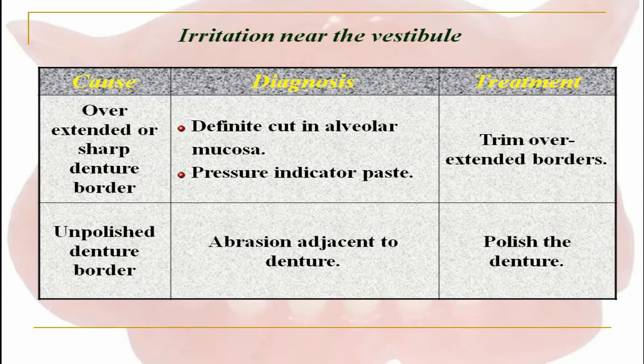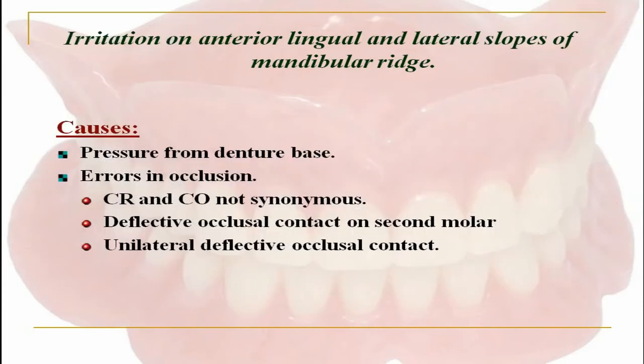Irritation near the vestibule is caused by overextended or sharp denture borders. The diagnosis is a definitive cut in the alveolar mucosa, or pressure indicator paste can be used. Treatment is to trim the overextended borders. Unpolished denture borders can also cause irritation near the vestibule; the abrasion adjacent to the unpolished area is visible in the patient's oral cavity. Treatment is simply to polish the denture.